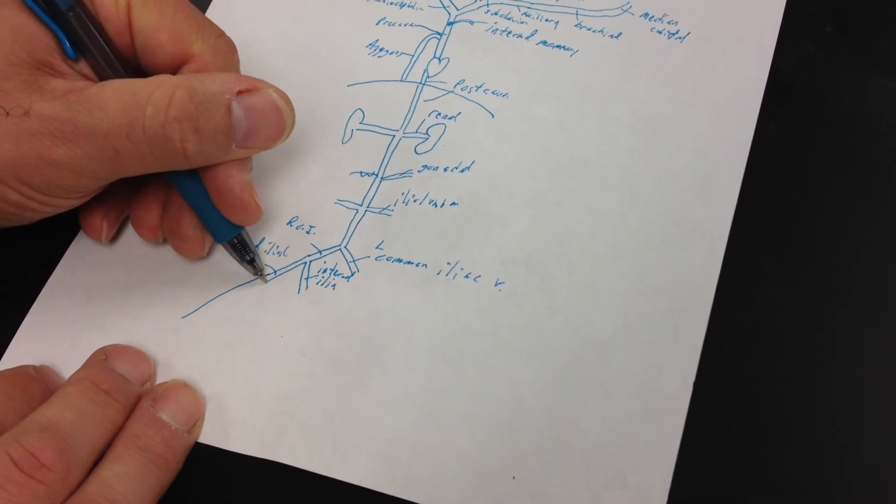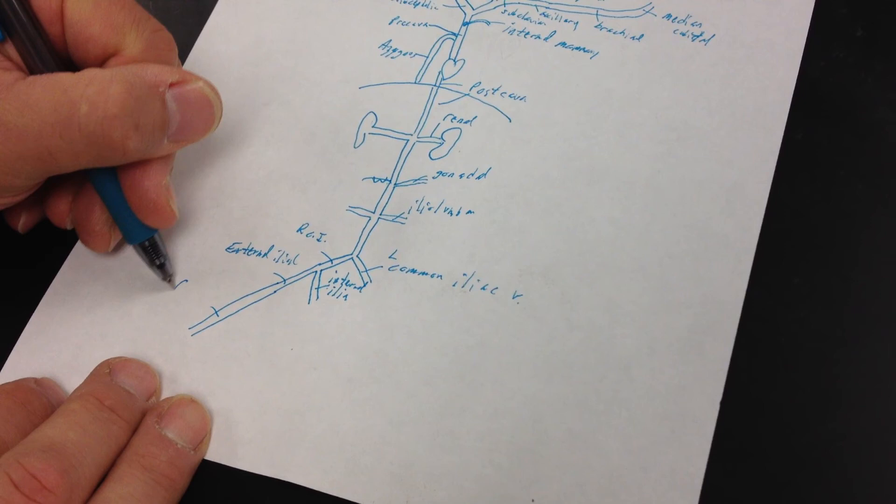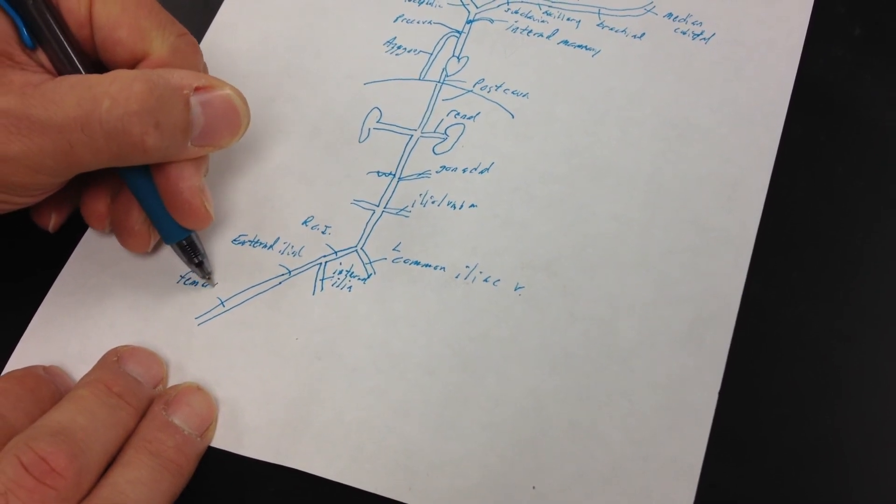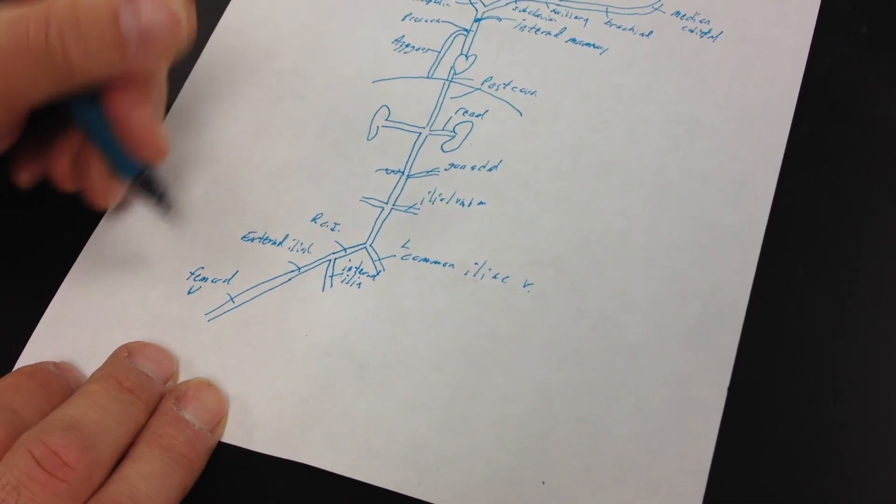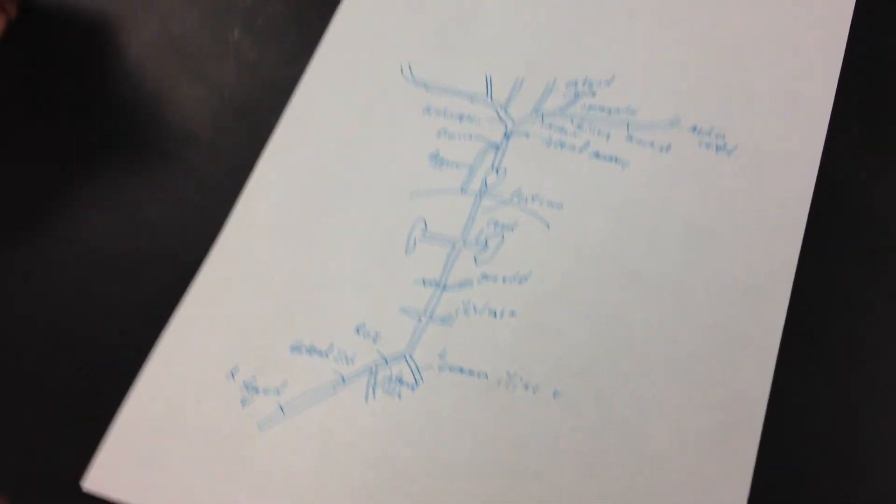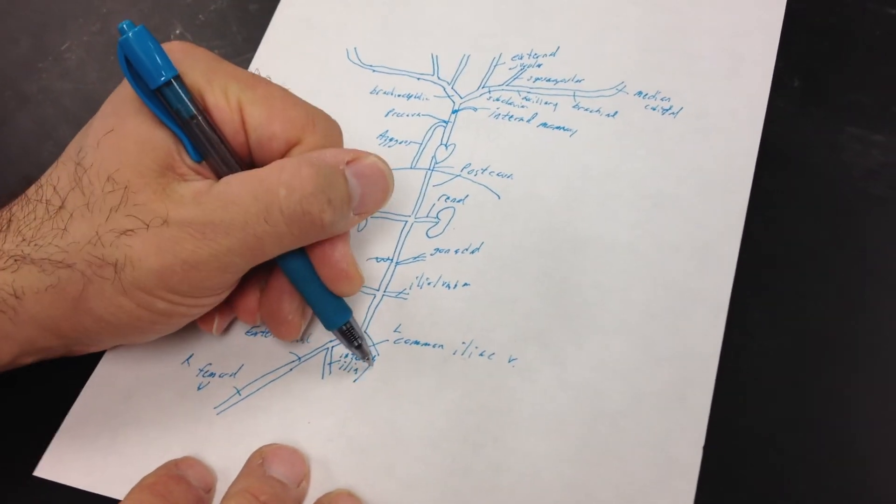And then the external iliac is going to continue out and become the femoral vein. And this would be right. Okay, and we have the same thing going on on both sides here.